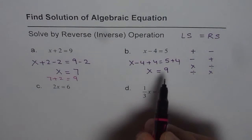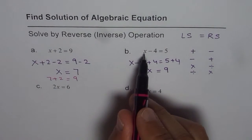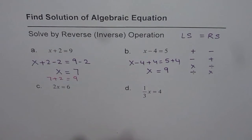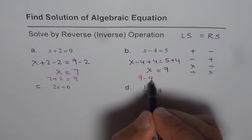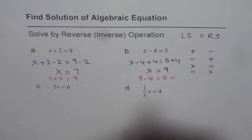We can check it. Let's substitute 9 in the original equation. We get 9 minus 4, which is indeed 5. That is correct.